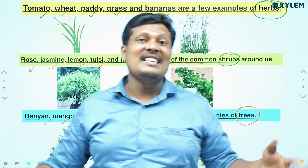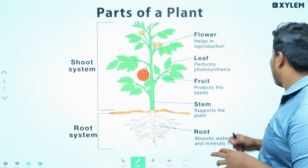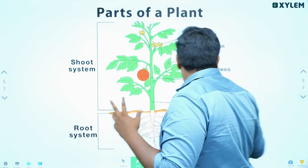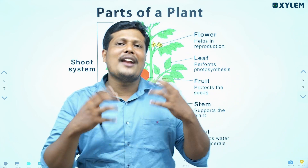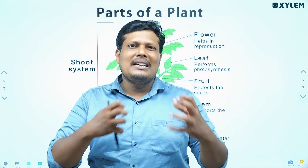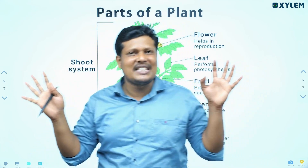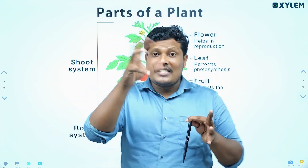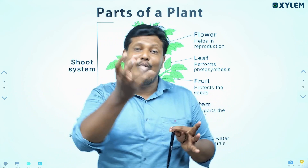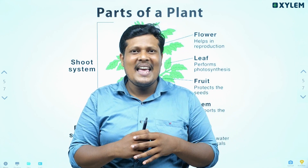We study herb, shrub, and trees — from small herbs to big gigantic trees. Now I am going to study the parts of a plant. You might think about different parts of the plant — such as roots, flowers, branches, and leaves.